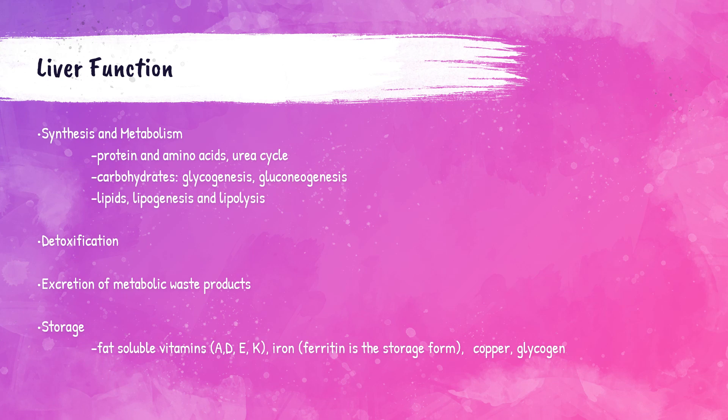Remember in the very first lecture on carbohydrates, we talked about glycogen. Glycogen is the storage form of glucose that is stored mainly in the liver and the skeletal muscle. So when there's too much glucose in the blood and the body can't utilize it, it converts it into glycogen and stores it primarily in the liver.